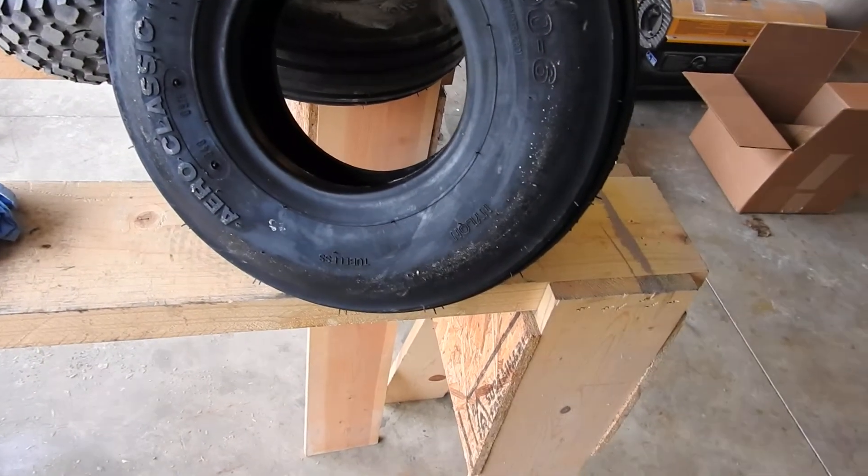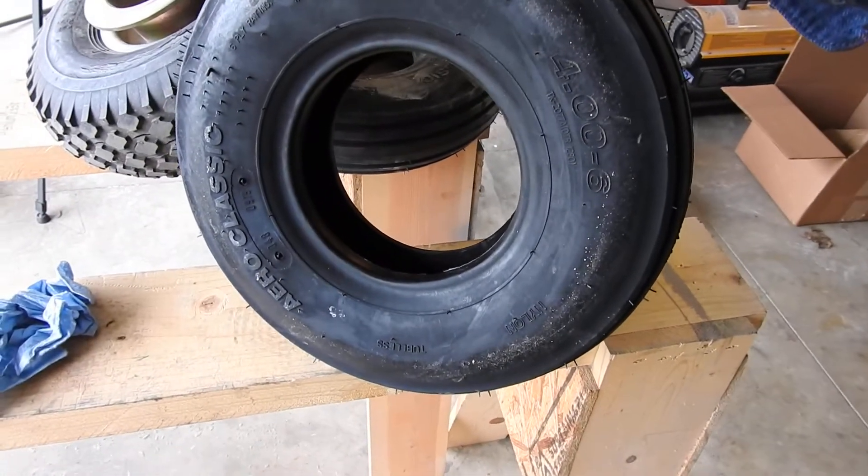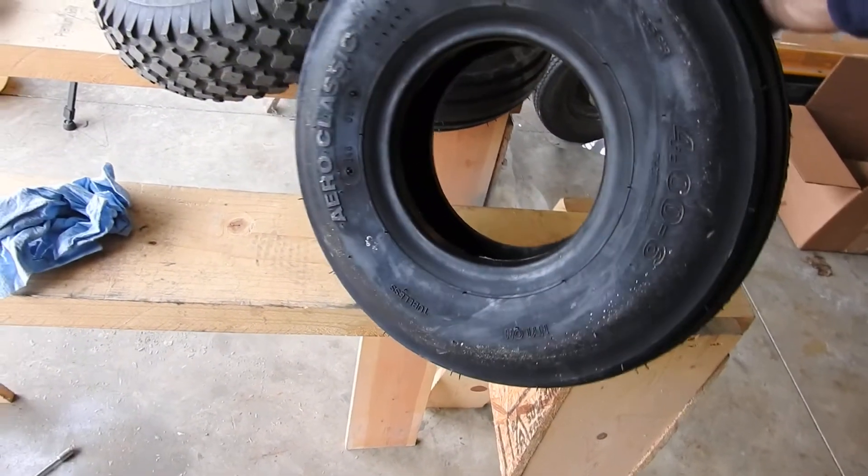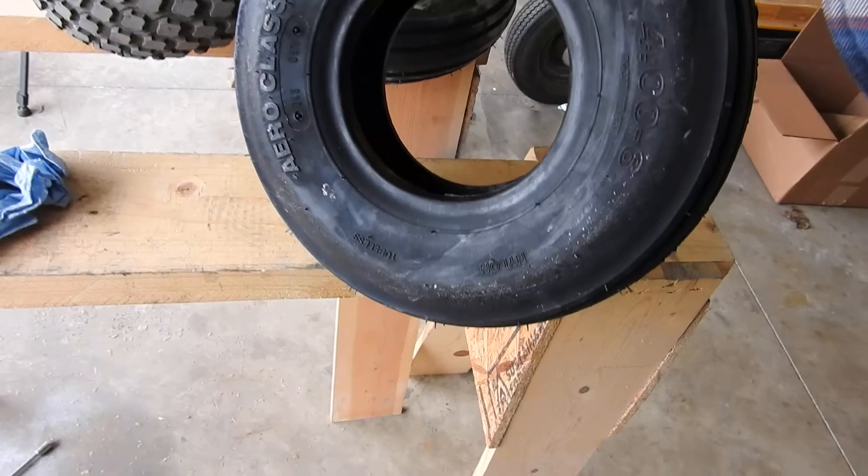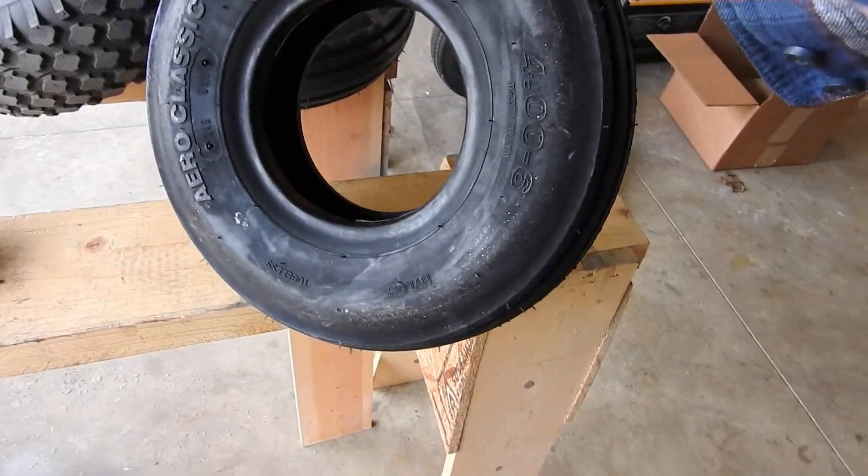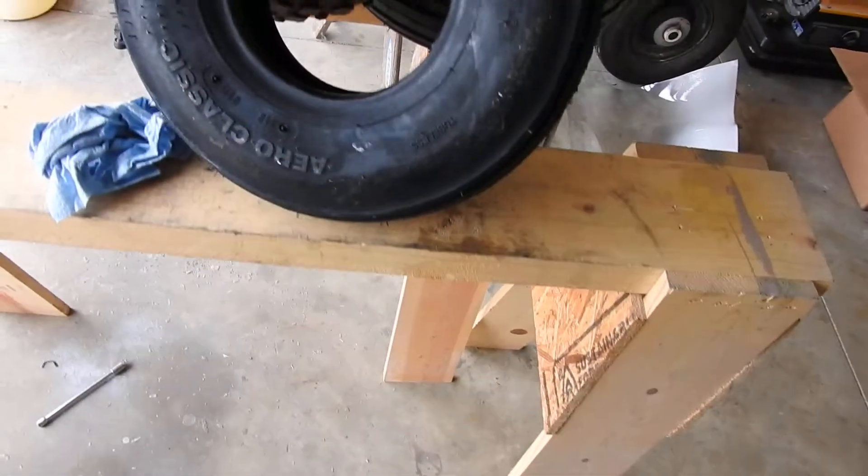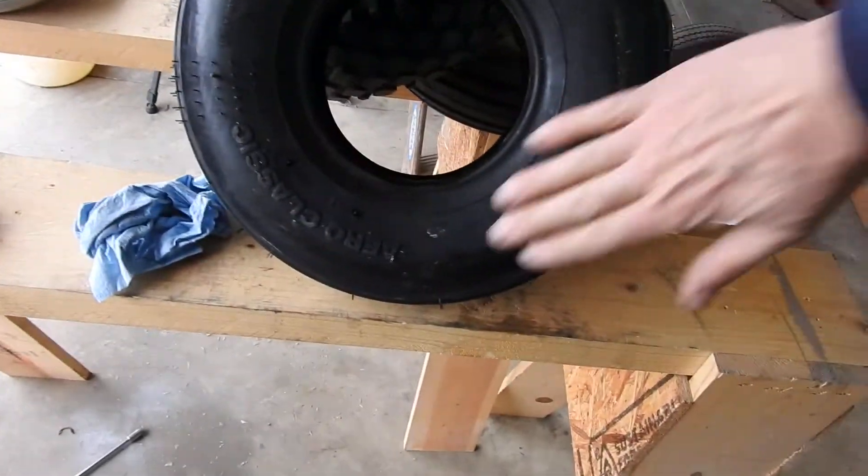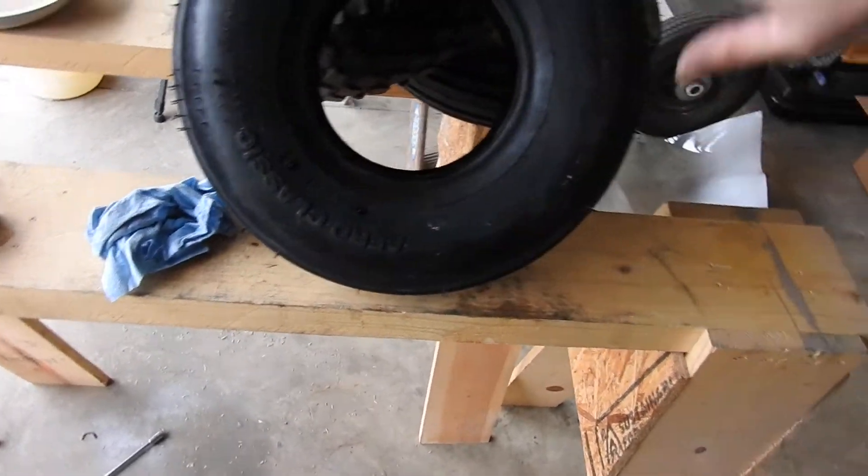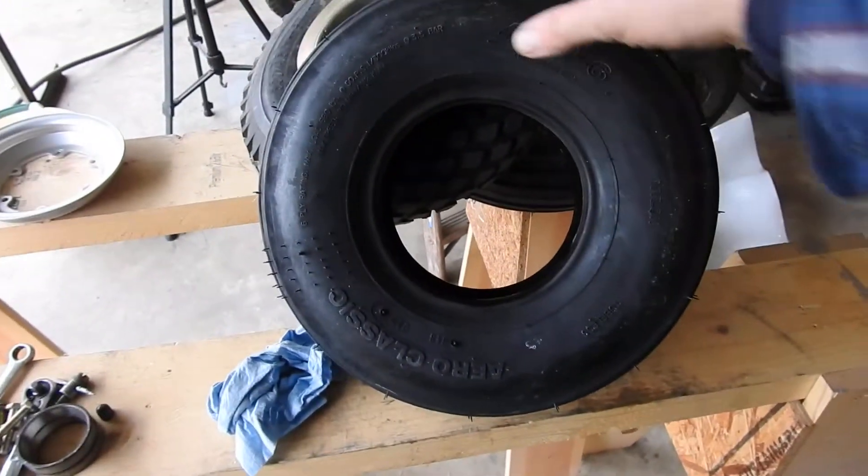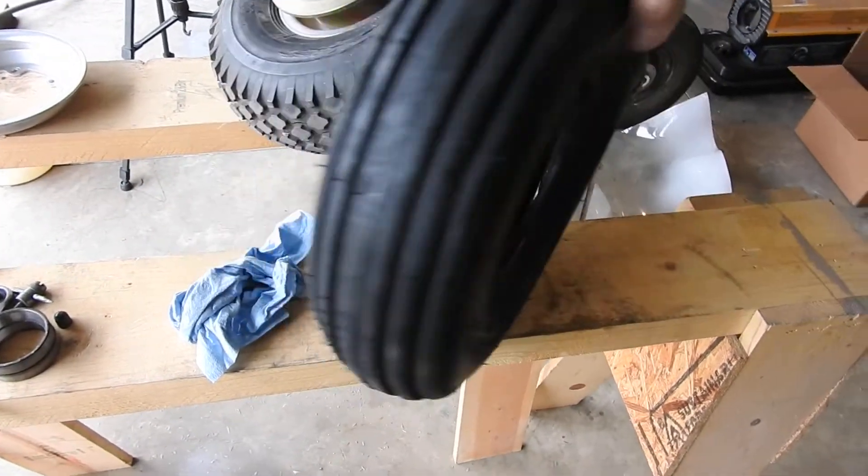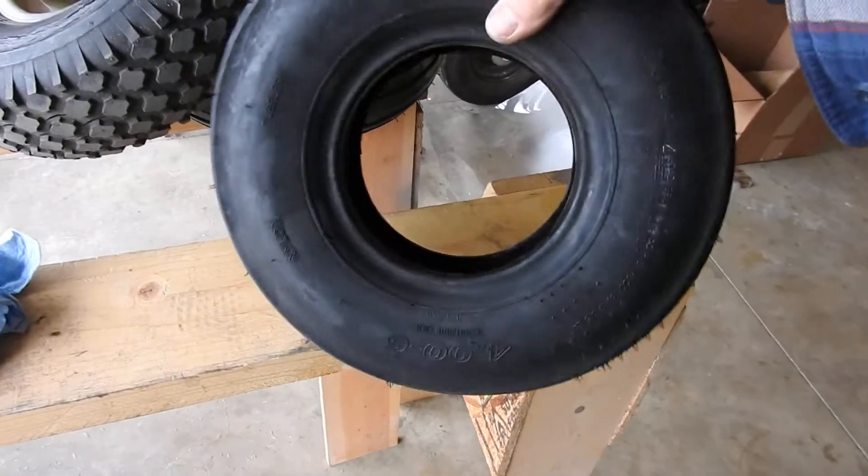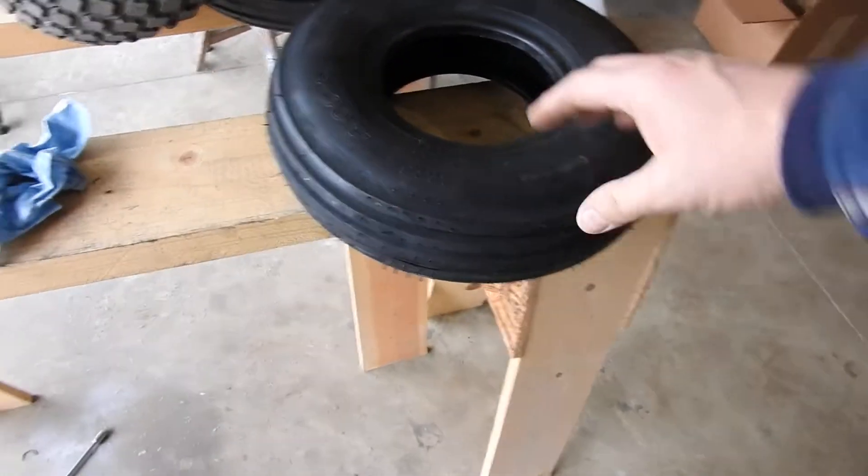I ordered these things Tuesday morning, I think before noon. And they were here Wednesday morning before noon. It's like 24 hours these tires were here. I expected they were going to ship them from Georgia, their main warehouse. But it ends up, they must have bought out some company over by Harrisburg, PA. Because that's where they came from. They came from Harrisburg. Since I live in the Erie area, they came overnight, one day. Couldn't ask for better.